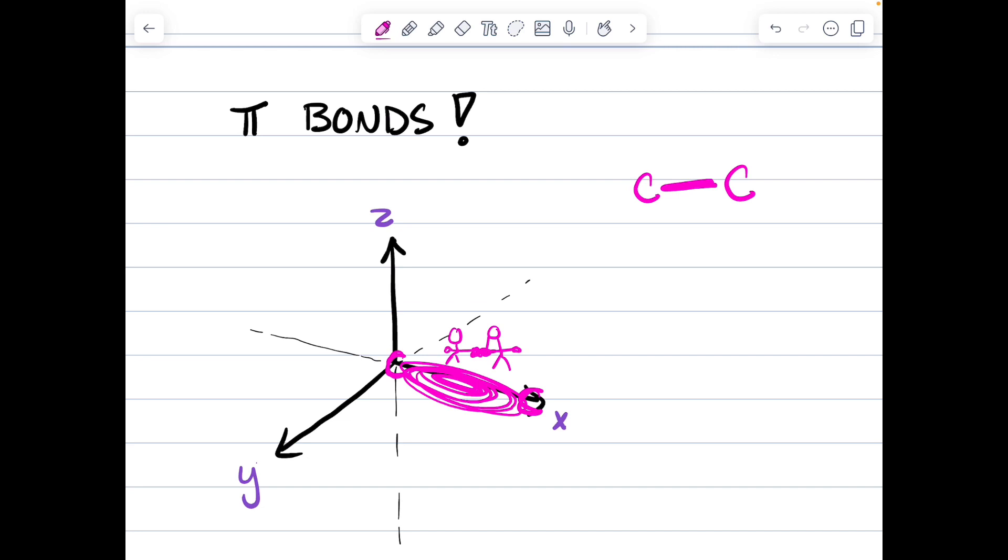But now, if two atoms want to make a second bond, a pi bond, if you consider the Cartesian plane where the x, y, and z are all parking stalls, parking stall x is now occupied. So to make a second bond, it needs to now park in either the z or the y axis. What if it parked in the z? It parks there. Well, then we got a pi bond.